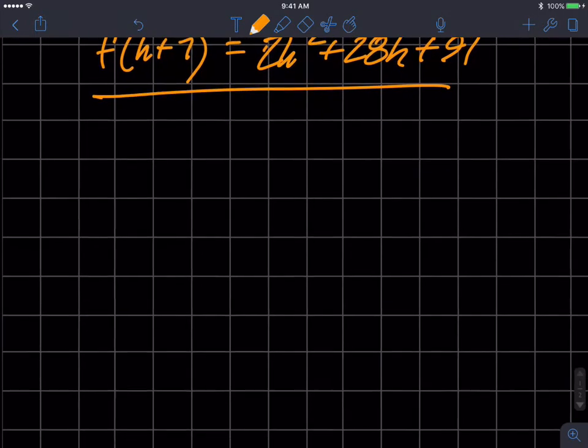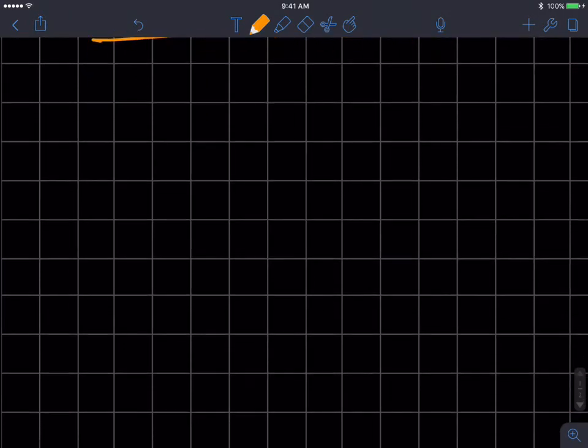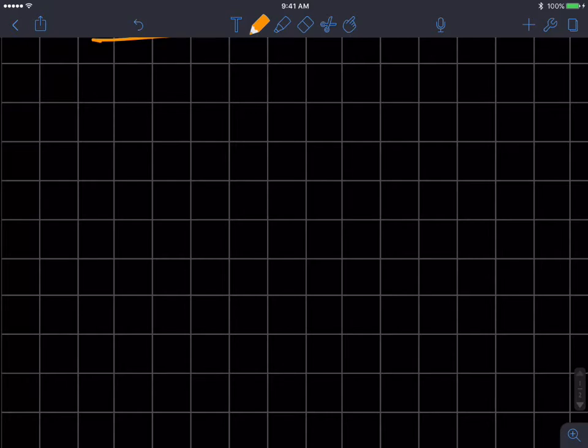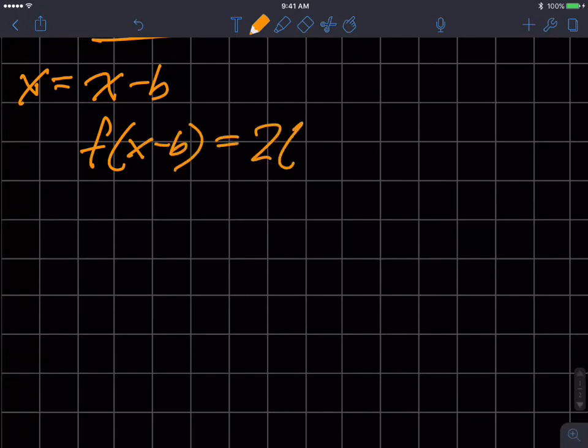So one more example. Same function, but now I want to know what x minus b is equal to. So what is the function equal when x is equal to x minus b? So f of x minus b is equal to 2 times x minus b, the quantity squared minus 7.